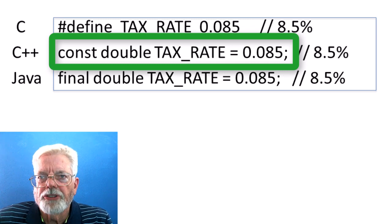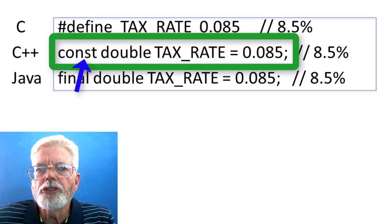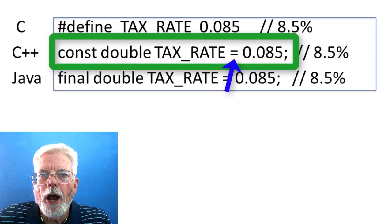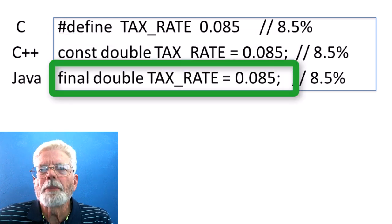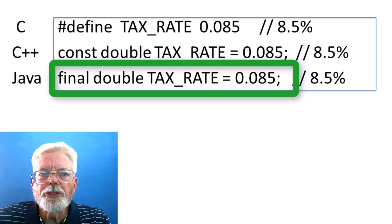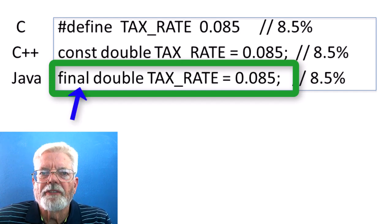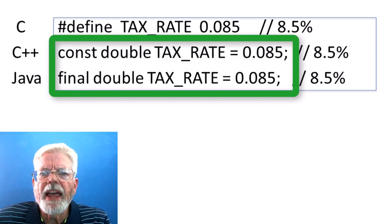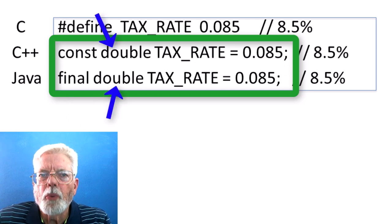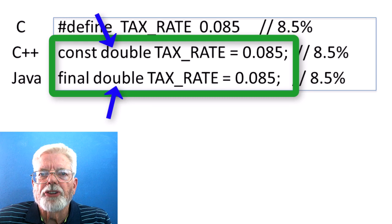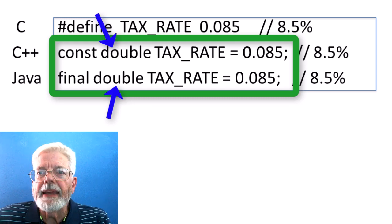C++ starts a constant definition with the word const and uses the assignment operator and a semicolon at the end. Java is similar to C++ but uses the keyword final instead of const. C++ and Java are also similar in that a data type is associated with the constant, in this case double, but constants can be defined with any data type.